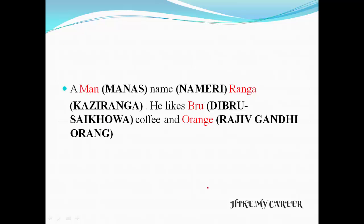The story is: A man named Ranga — he likes blue coffee and orange. MAN means Manas National Park. NAME means Nameri National Park. RANGA means Kaziranga National Park. BLUE means Dibru-Saikhowa National Park. And ORANGE means Rajiv Gandhi Orang National Park.